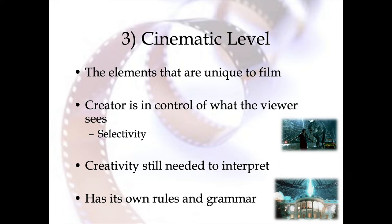The bulk of this class we're going to be looking at the cinematic level — the things in movies that are unique to film, things that don't really overlap with live theater or the written word. Here, the creator of the film is in control of what the viewer sees. Unlike literature, where we create what characters look like, or drama, where we can look left or right on stage — in film, where we look is controlled by the director. If they want us to see a close-up of a tear, a small ring, some foreshadowing event, the director makes that choice and we have to go with it. We still need to apply creativity to interpret, but that control has shifted.